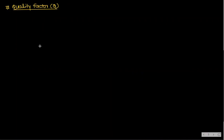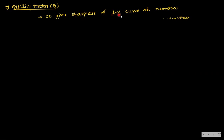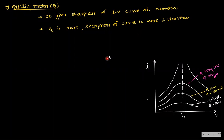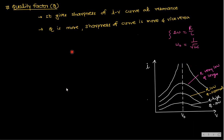The quality factor gives the sharpness of the current-voltage curve at resonance. If Q is more, the sharpness of the curve is more; if less, it is less. When R is high, Q is low; when R is low, Q is normal; and when R is very low, Q is large — the curve is sharper.